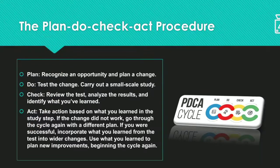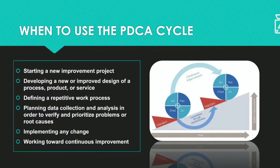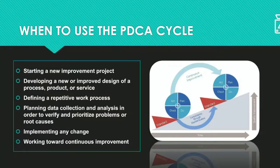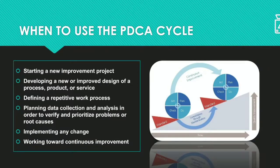Now let us see when to use the PDCA cycle and in what situations. First, when we are starting a new improvement project, you need to implement the PDCA cycle and plan for that. Second, while developing a new or improved design of a process, product, or service. Third, when we need to define repetitive work in progress — if you have any repetitive work, then you need to apply this PDCA cycle.